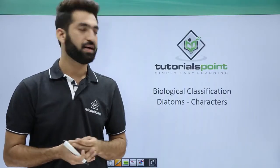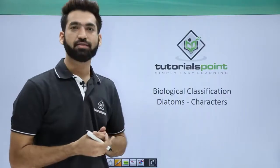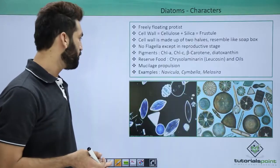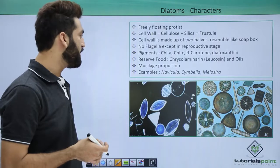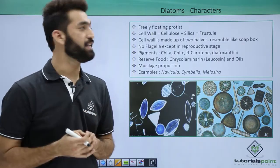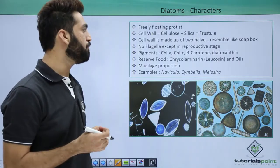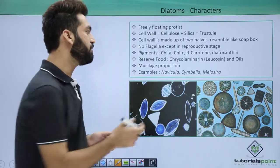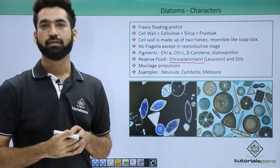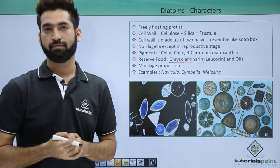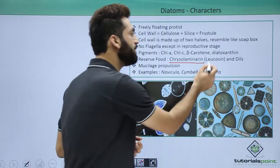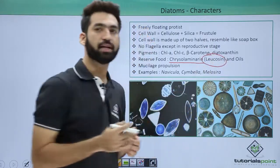In this session we'll be discussing different characters related to diatoms. Diatoms are members of Chrysophyta, and Chrysophyta have the reserve food which is called chrysolaminarin. Remember they have the reserve food in the form of chrysolaminarin. Chrysolaminarin is also called leucosin.